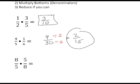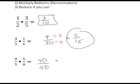The last problem is eight fifths times five eighths. Step one: multiply the tops — eight times five is forty. Step two: multiply the bottoms — five times eight is forty. Step three: reduce if you can. Forty divided by forty is one, or you can go through the reducing process — the top and bottom both divide by forty.